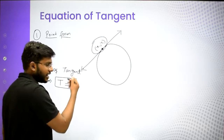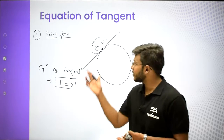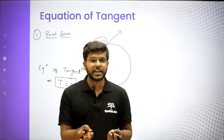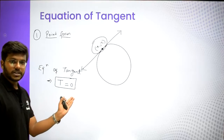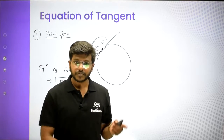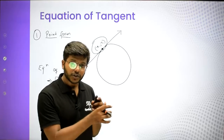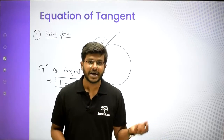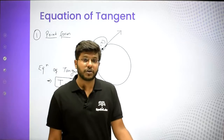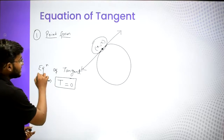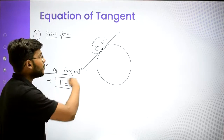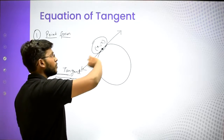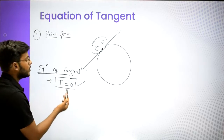Most of you will be thinking: what is this T equal to 0? A tangent is a straight line, so its equation should be something like ax plus by plus c. So what is T equal to 0? It's a standard notation - just like we saw S equal to 0 and S1. S equal to 0 is the equation of the curve, S1 means putting a given point in the equation of the curve. Similarly, T equal to 0 is the equation of the tangent in point form.